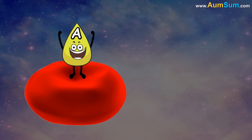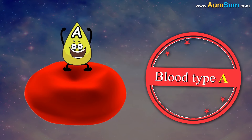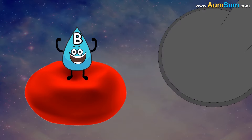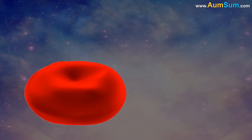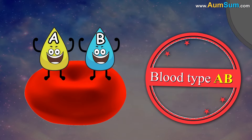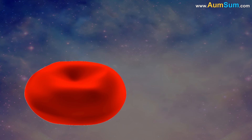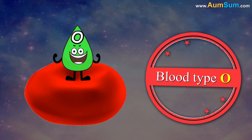If we have A antigen, then our blood type is A. If we have B antigen, then our blood type is B. If we have both antigens, then our blood type is AB. And lastly, if we have neither A nor B, then our blood type is O.